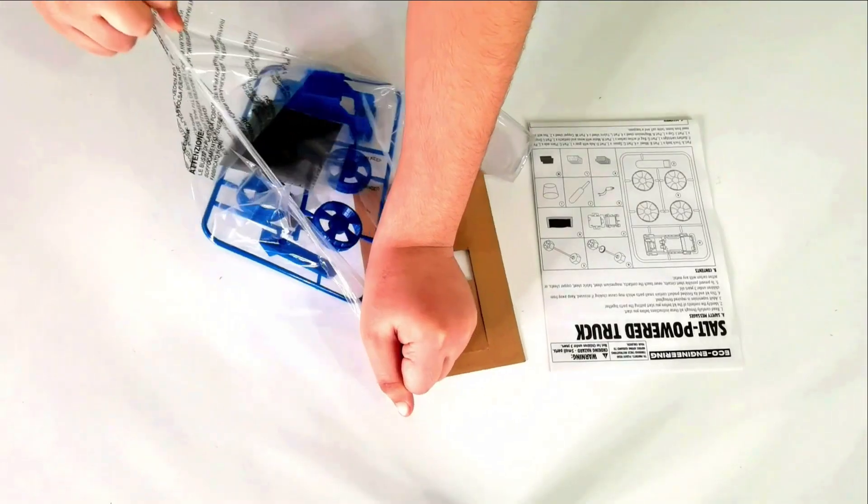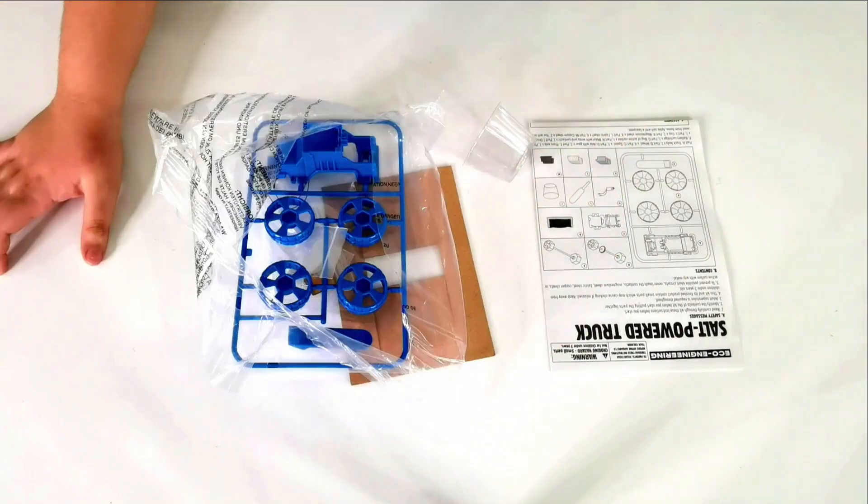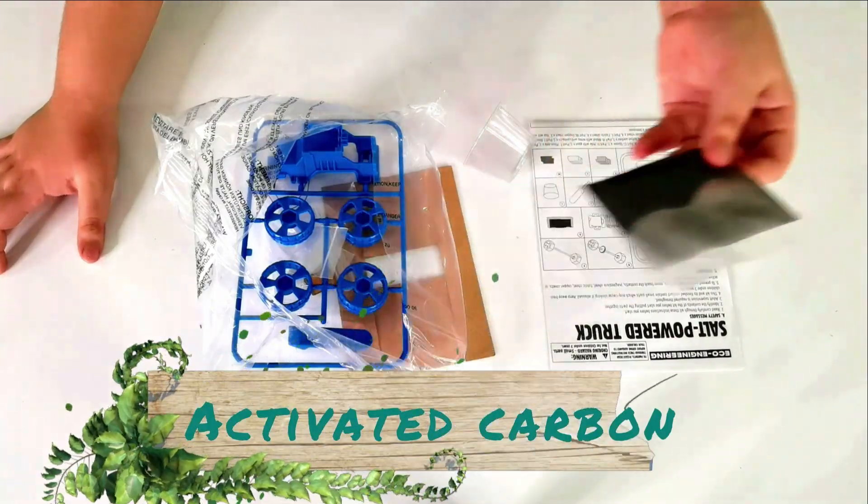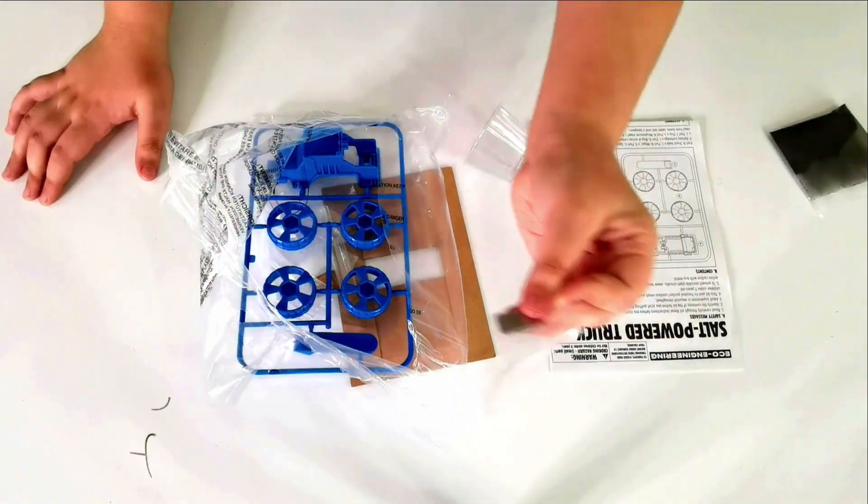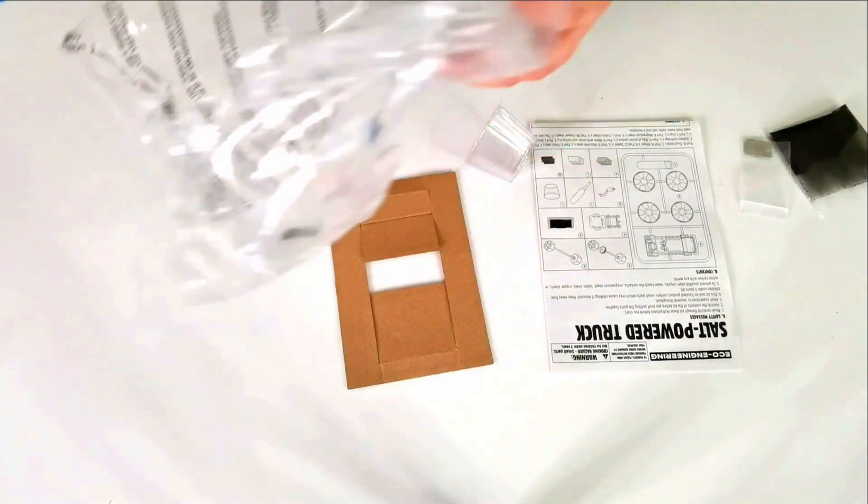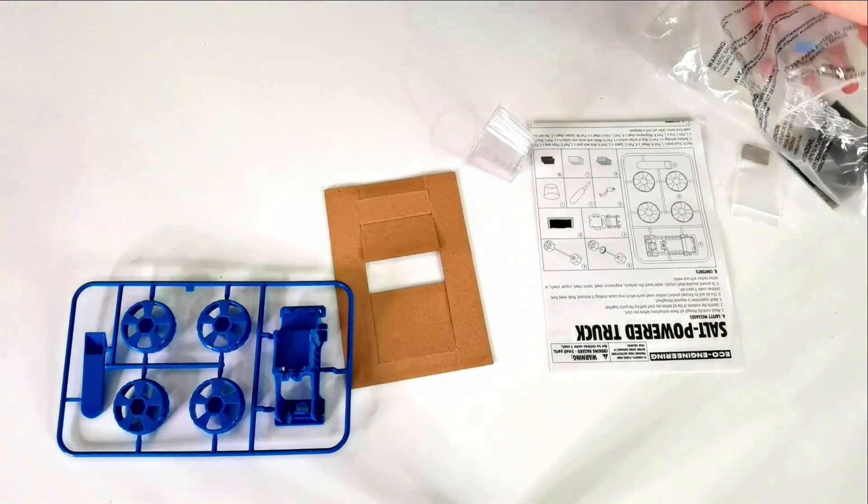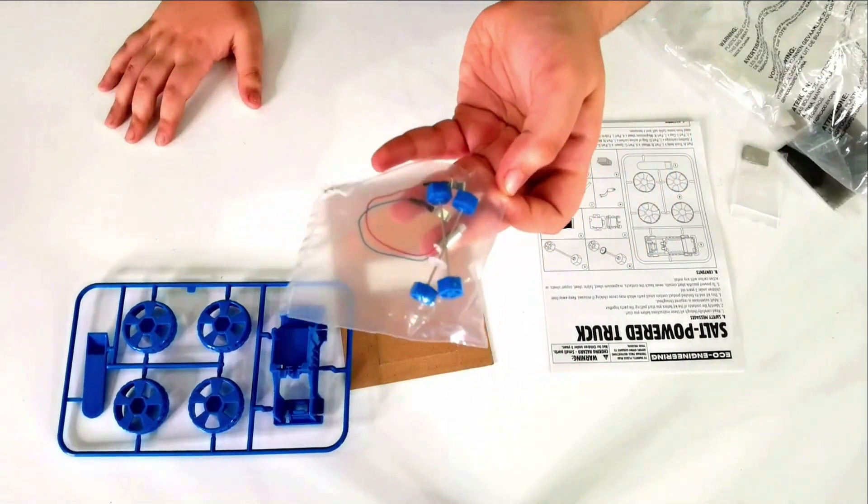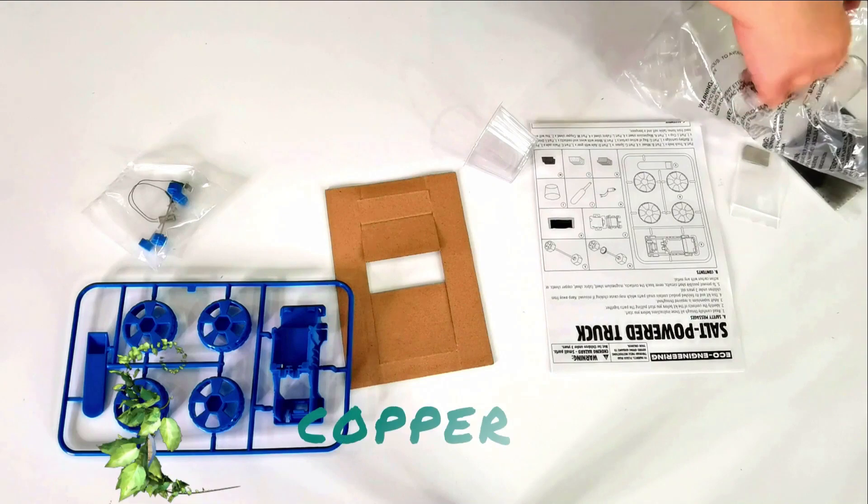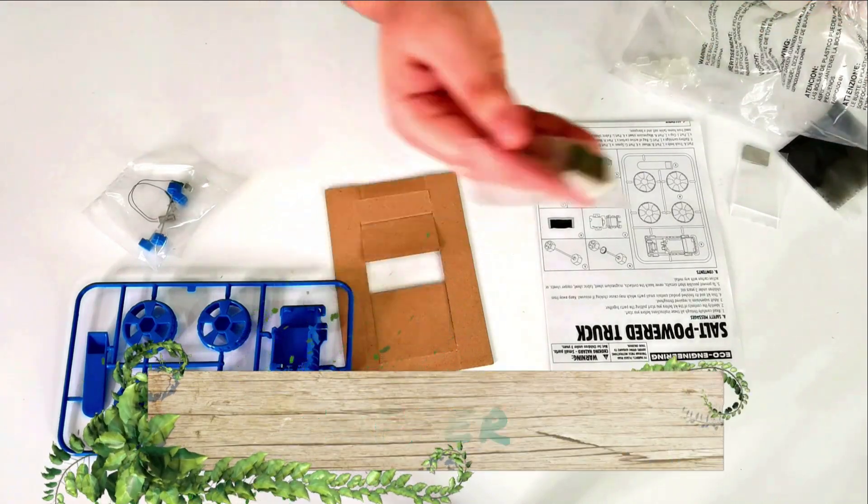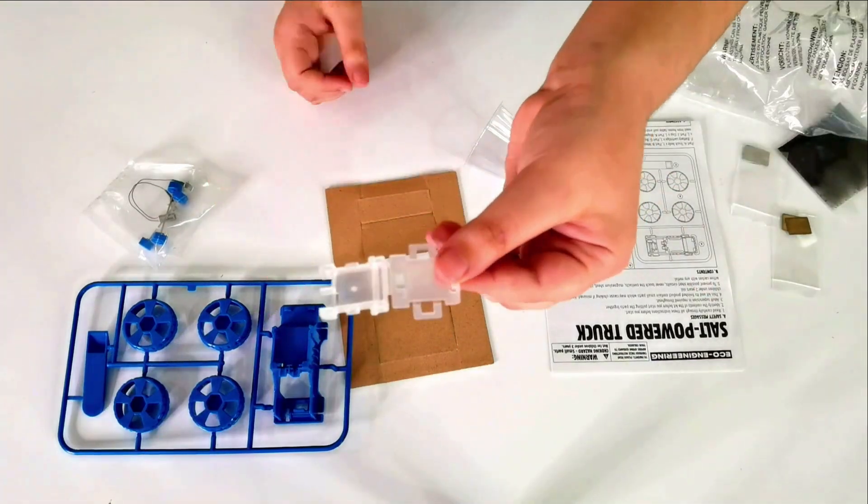Here we have activated carbon, here we have magnesium, and here we have our parts of the car. And here we have all of our wires and connectors. We got copper and we got a shield, so that's cool.